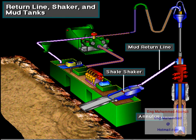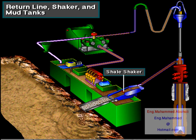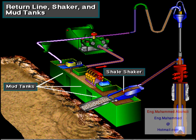From the annulus, the mud with the cuttings in it goes through the return line, sometimes called the flow line, to the shale shaker. The shale shaker removes the cuttings from the mud. The mud then falls into the mud tanks, where the mud pump can pick it up and continue the circulation process.